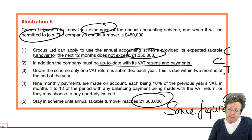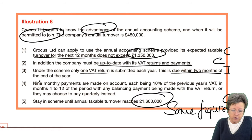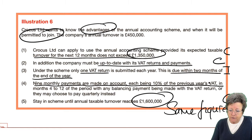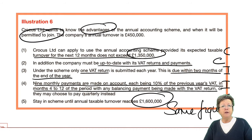Tax is due within two months of the end of the year. Nine monthly payments are made on account, each being 10% of the previous year's VAT, in months 4 to 12 of the accounting period, with the balance payment submitted with the return. The VAT authorities don't want to wait 12 months for all the VAT, so you have to make payments on account.